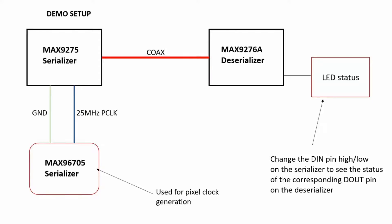To verify that the forward channel link is properly configured, I have soldered an LED on the D-out pin of the Deserializer side. On changing the D-in pin high and low from the Serializer, the corresponding D-out pin should change. Let's jump to the setup and see what happens when we change the D-in pin high and low on the Serializer side.